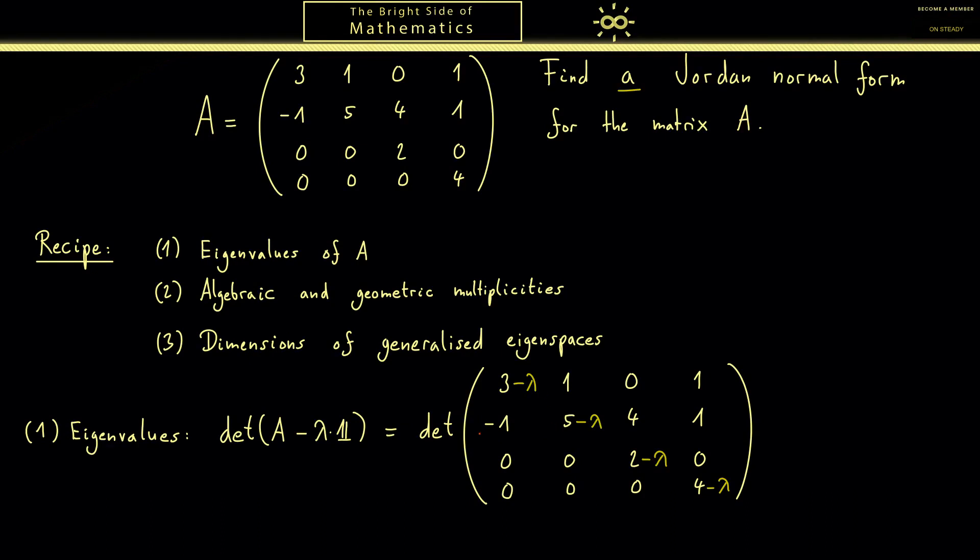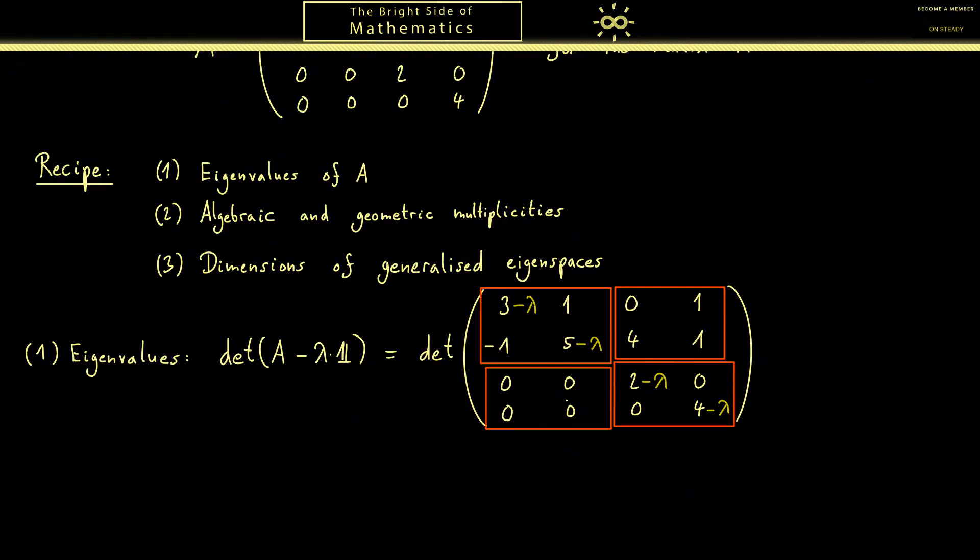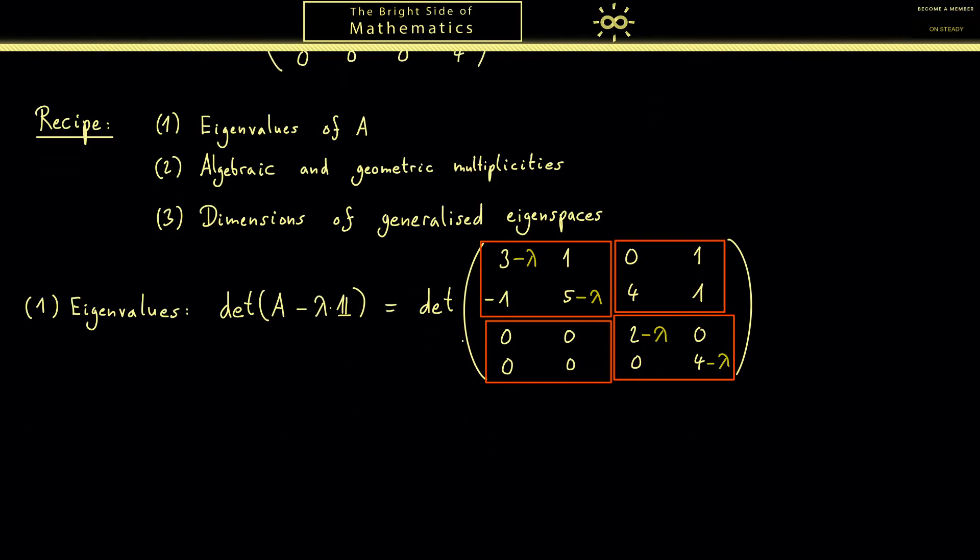From this point on you can use everything you know for calculating determinants. For example, I know if the matrix has a block structure - you see the blocks here - and the left bottom block has only zeros, then there is a nice block formula for the determinant. If you use that, you save a lot of time because you don't have to expand the whole 4 times 4 determinant. You can just multiply two 2 times 2 determinants.